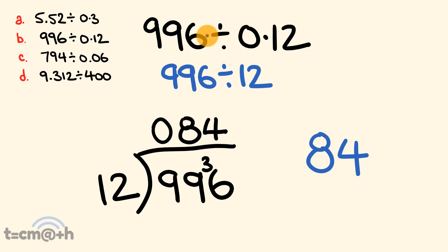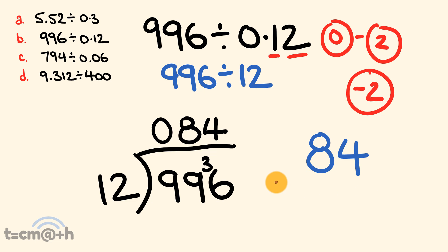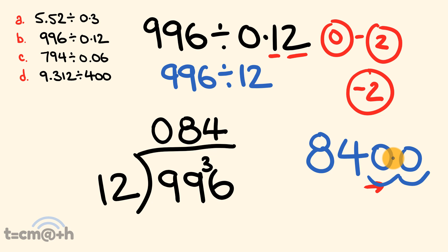Now we work out the decimal places. Looking at 996, we have zero decimal places. We are dividing by 0.12, which has 2 decimal places. Like before, we subtract: 0 take away 2 equals negative 2. When we have a negative number, instead of moving the decimal to the left, we move it to the right. So we start with a decimal and move it 1, 2 times, filling the gaps with zeros. Our answer is 8400. So 996 divided by 0.12 is 8400.